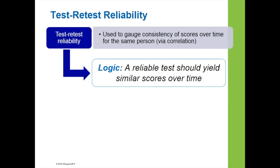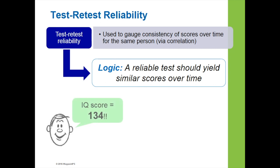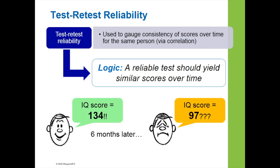The first type of reliability is called test-retest reliability, and this one is used to gauge consistency of scores over time for the same person or group of individuals. The logic is that a reliable test should yield similar scores over time. For example, if you took an IQ test and got a 134 at one point in time, and then six months later took the same test again but got a 97, you would not consider this test reliable.